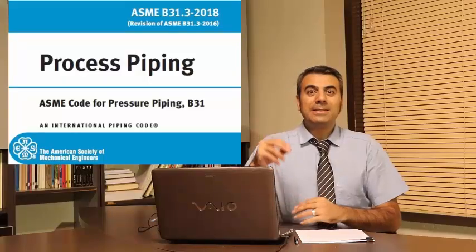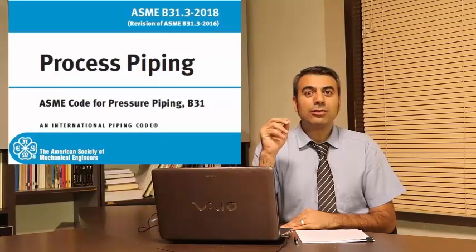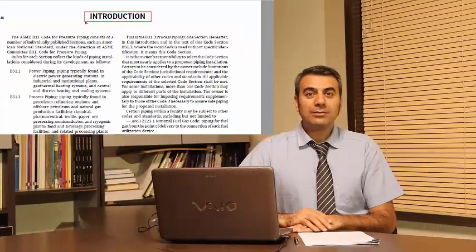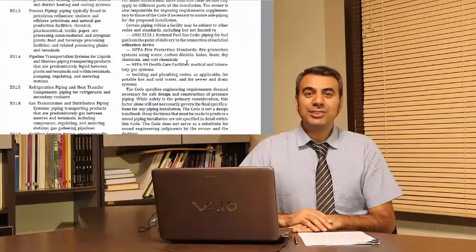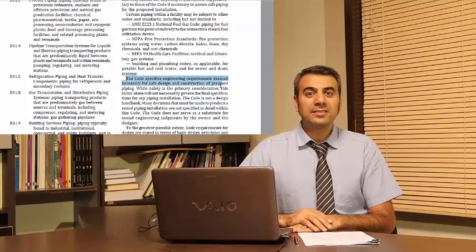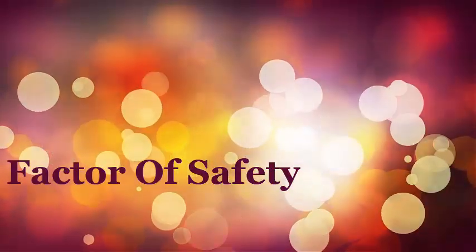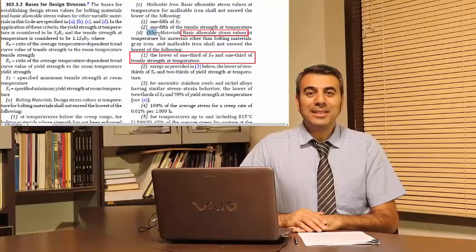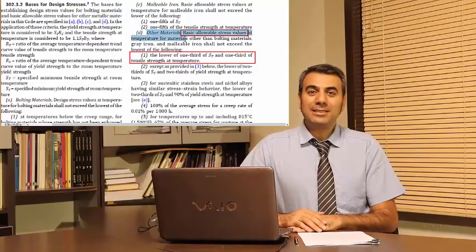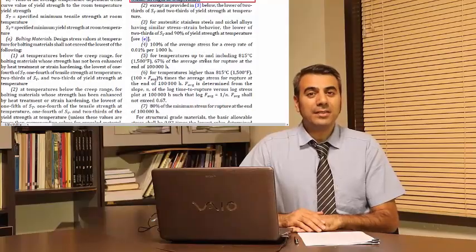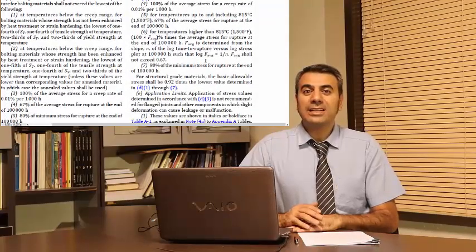In this course we will discuss why we trust in code requirements instead of considering all safety factors individually. The code specifies engineering requirements considered necessary for safe design and construction of a pressure piping system. I will explain how safety factors are implemented in codes and how different codes use different methods for ensuring adequate safety for all projects due to their scope of work.